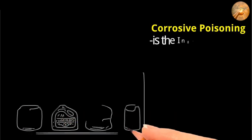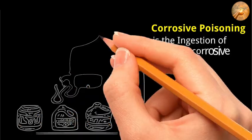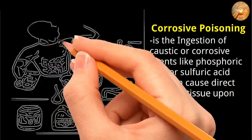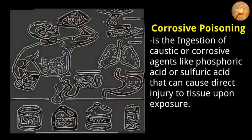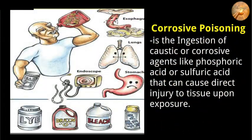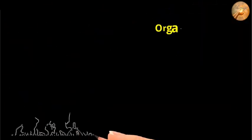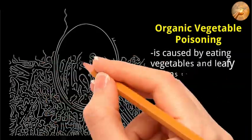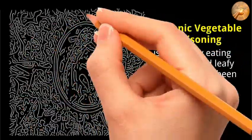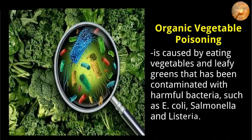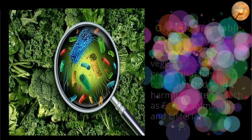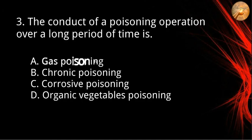Corrosive poisoning is the ingestion of caustic or corrosive agents like phosphoric acid or sulfuric acid that can cause direct injury to tissue upon exposure, leading to oral pain, ulcerations, and abdominal pain. Organic vegetable poisoning is caused by eating vegetables and leafy greens contaminated with harmful bacteria such as E. coli, salmonella, and listeria. The correct answer for number three is letter B, chronic poisoning.